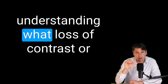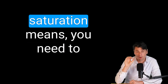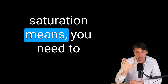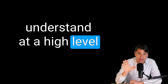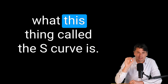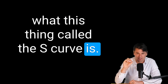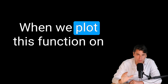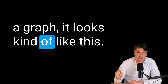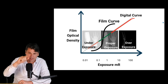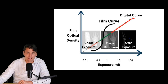To understand what loss of contrast or saturation means, you need to understand at a high level what this thing called the S-curve is. When we plot this function on a graph, it looks kind of like the shape of an S — something we call a sigmoid in math.